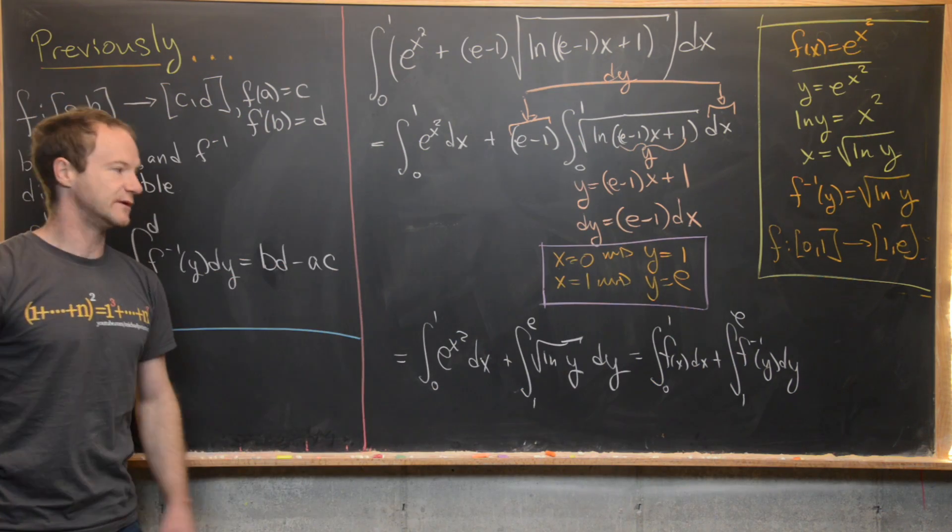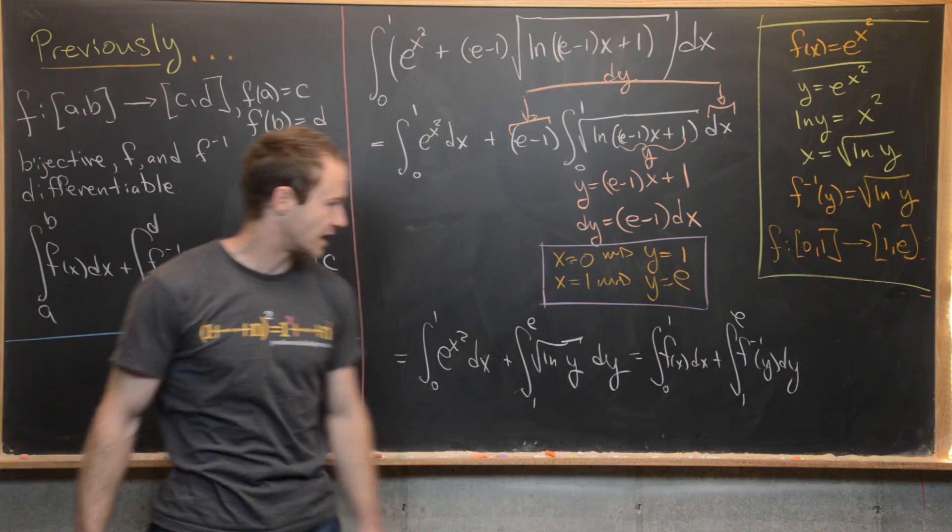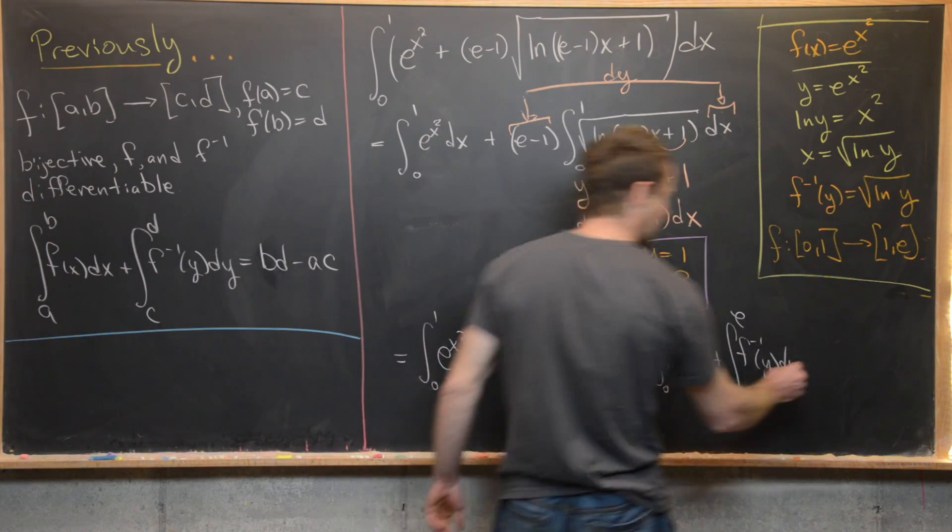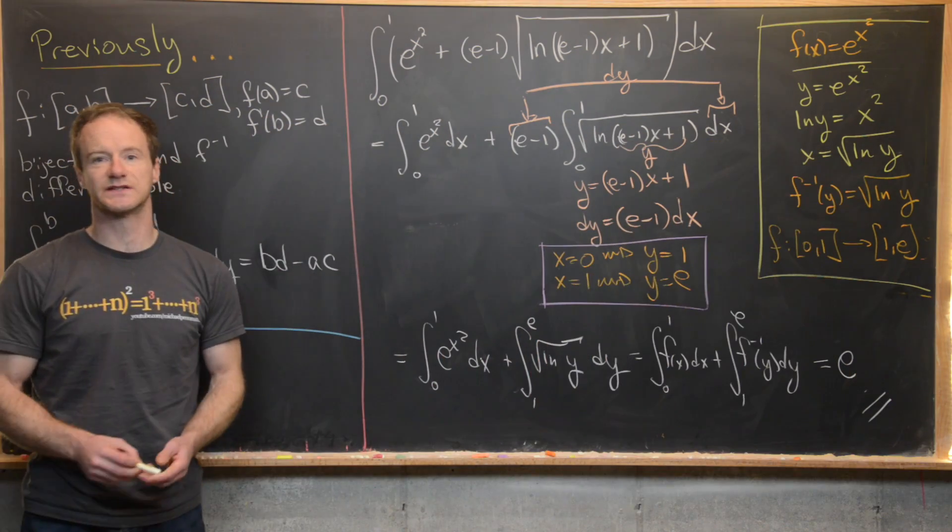Using our notation that we've developed already, using this identity over here, we see that that is e times 1 minus 1 times 0. In other words, this is e. And that's a good place to stop.